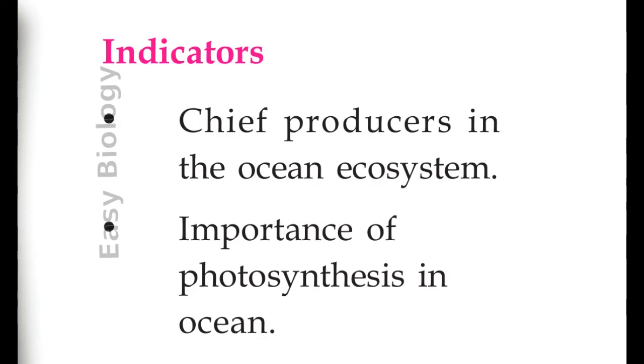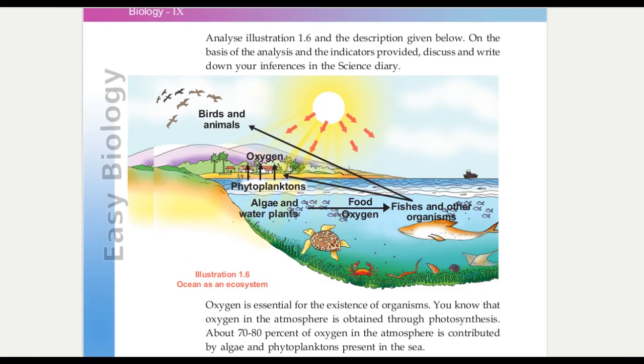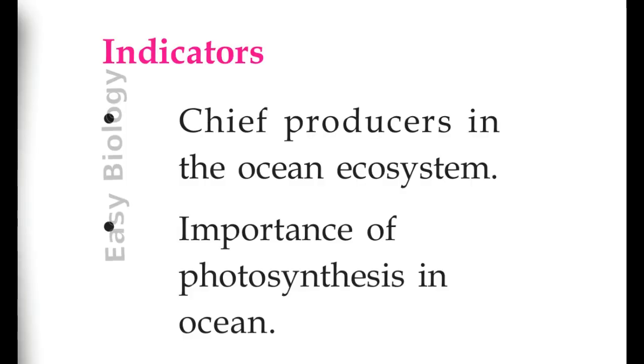Now we can find out the answers of the indicators. The first indicator, chief producers in the ocean ecosystem. Answer, algae and water plants.